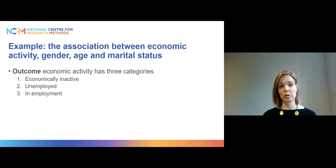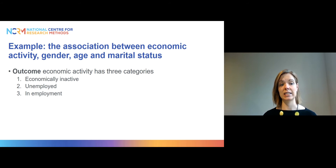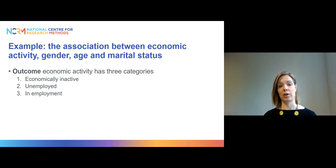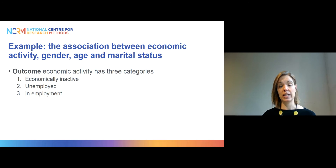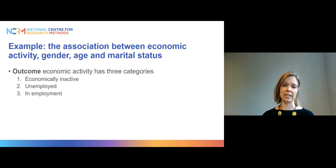As before, we will go through this by using an example. We will continue looking at economic activity, and like in the first video our outcome has three categories: people are either economically inactive, unemployed, or in employment. In the first video we only added gender as an explanatory variable, but this time we will also add age and marital status.